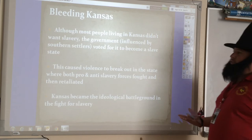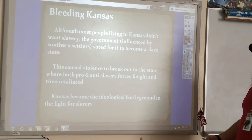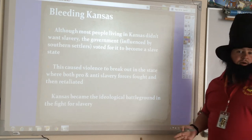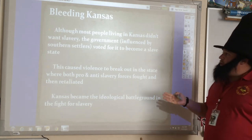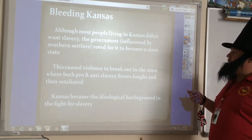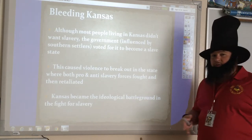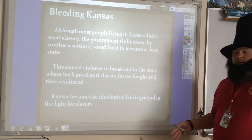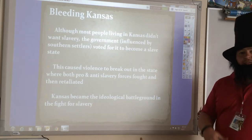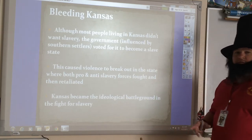Although most people who actually lived in Kansas initially didn't want slavery, a bunch of southerners — specifically people from Missouri — moved in in large numbers and voted for it to become a slave state. What ends up happening is that you sort of have two different governments in one state. They eventually turn violent. Both pro- and anti-slavery forces fought, and then one would retaliate, and the next group would fight and retaliate. Kansas becomes an ideological battleground in the fight over slavery.